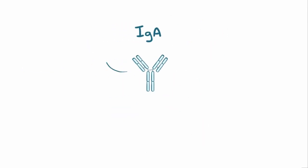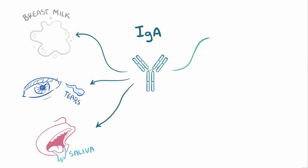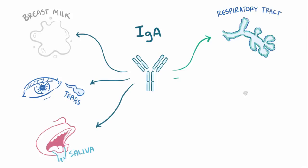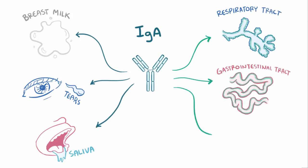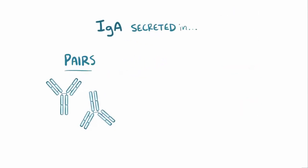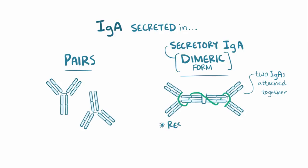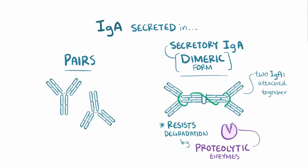IgA is the main antibody found in breast milk, tears, saliva, and the mucosal secretions of the respiratory tract, gastrointestinal tract, and genitourinary tract. Unlike other antibodies, IgA can be secreted out in pairs or a dimeric form called secretory IgA, which is literally two IgA antibodies attached together. By being bound together, it helps both antibodies avoid degradation by proteolytic enzymes in harsh environments like the gut.